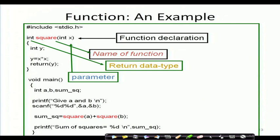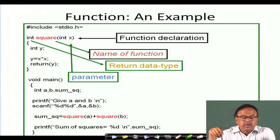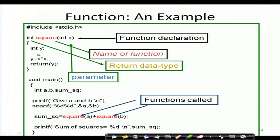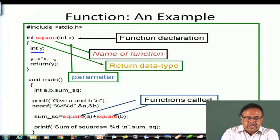Next we come to the body of the function. int y — that is a temporary variable. I call it temporary because it lives only as long as this function is active. As soon as the function ends, the definition of y is also lost. Here inside the body, I compute the square: y is assigned x times x, and then I return y.